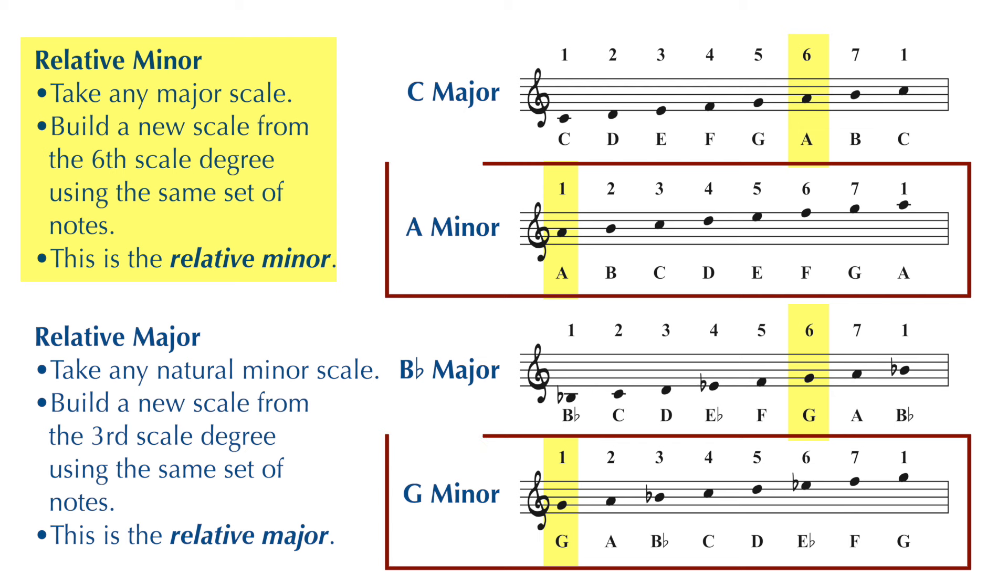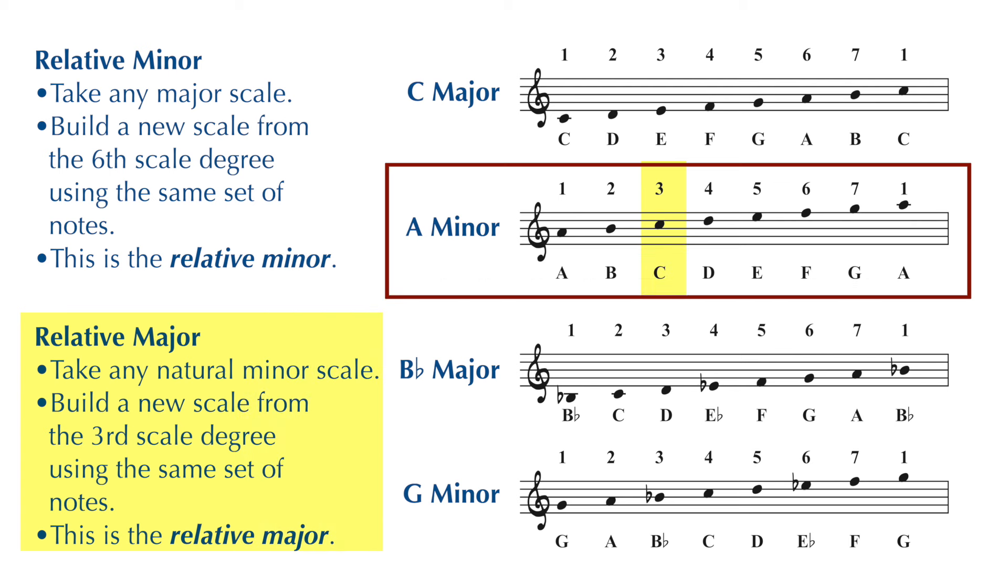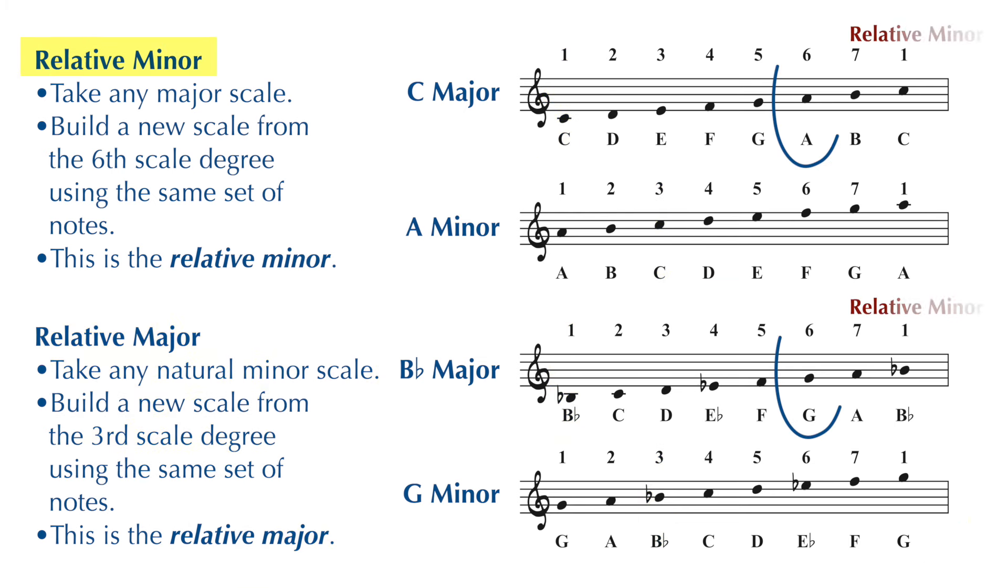It works the other way too. Notice that the third scale degree of A minor is C, and the third scale degree of G minor is B flat. So if you want to find the relative minor of a major scale, go to the sixth scale degree of that major scale. And if you want to find the relative major of a minor scale, go to the third scale degree of that minor scale.